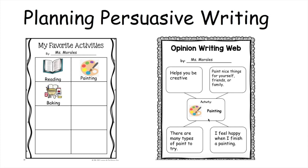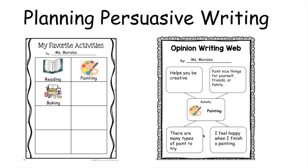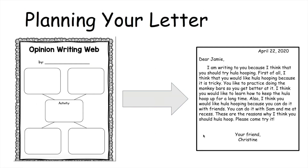The activity I chose was painting. I listed my reasons: painting helps you be creative, you can paint nice things for yourself, friends, or family, I feel happy when I finish painting, and there are many types of paint to try. So what you are going to do is take your opinion writing web that you worked on last week — with your activity in the center and your reasons.